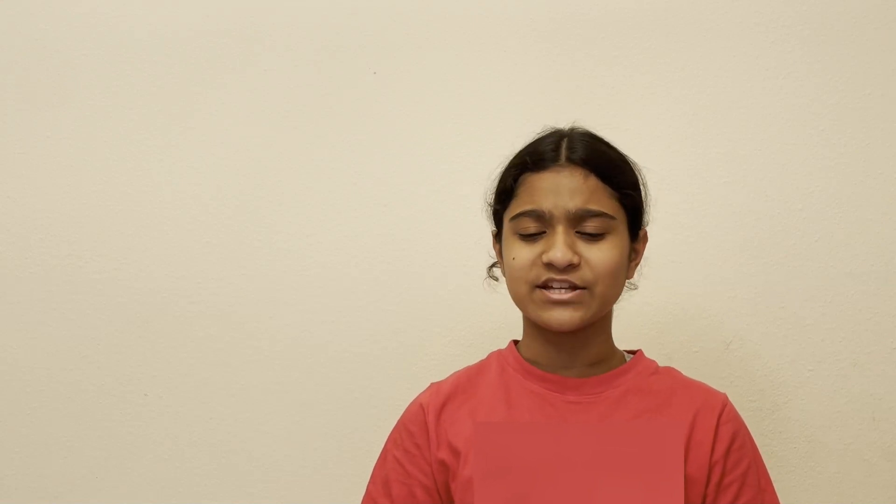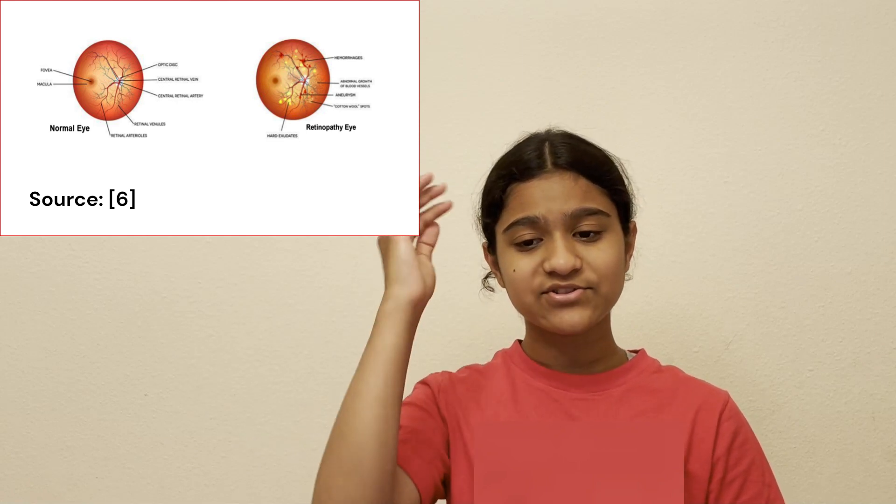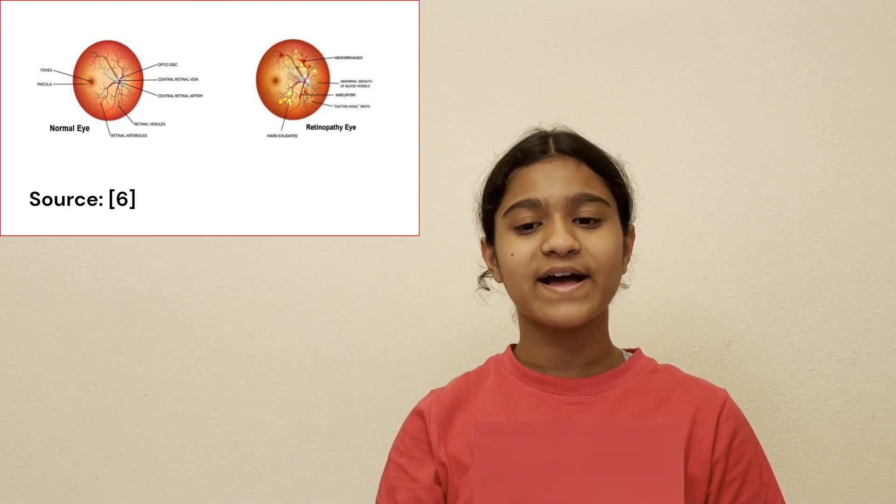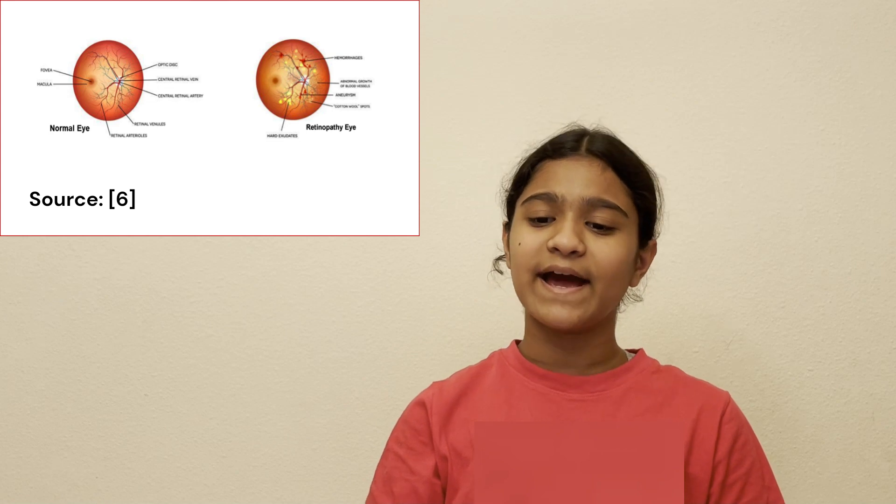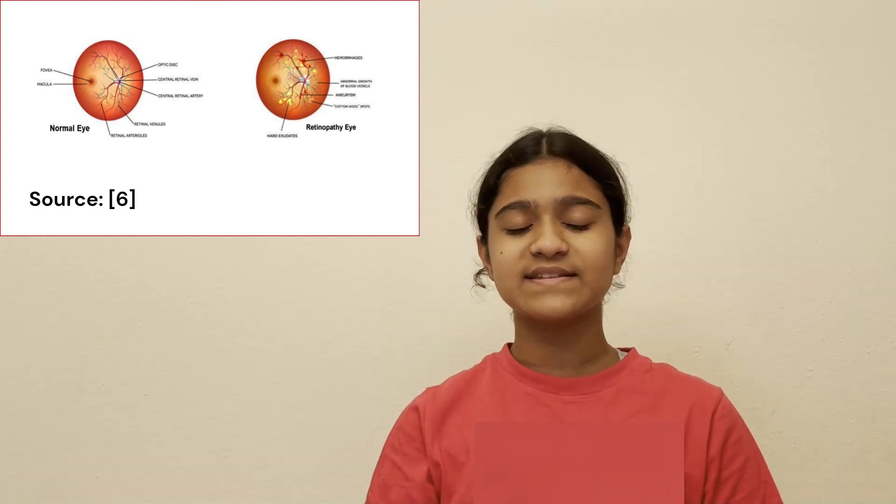First, what is DR? DR is caused by damage in the blood vessels in the retina. A normal retina has clear arteries and veins. An eye with DR has bulges in the veins and bits of yellow plaque.